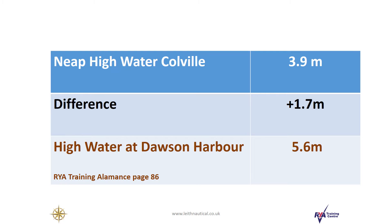When the high water height at Colville is only 3.9 metres, the difference at Dawson Harbour is different. In this case it is only an additional 1.7 metres, so the high water height at Dawson Harbour will be 5.6 metres.